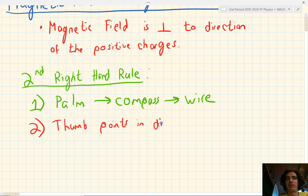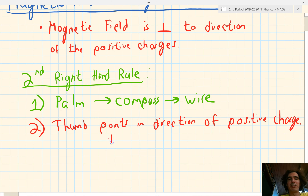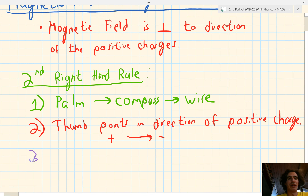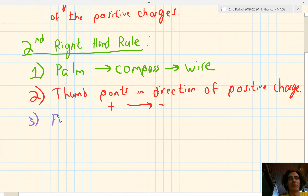The second thing is that our thumb still points in the direction of the positive charges — remember, charges flow from the positive terminal to the negative terminal. And then the last step: our fingers point in the direction of the north magnetic field. They also curl around the wire, which indicates the direction of the magnetic field.